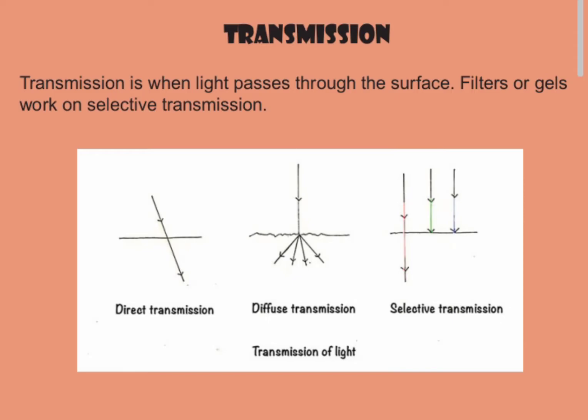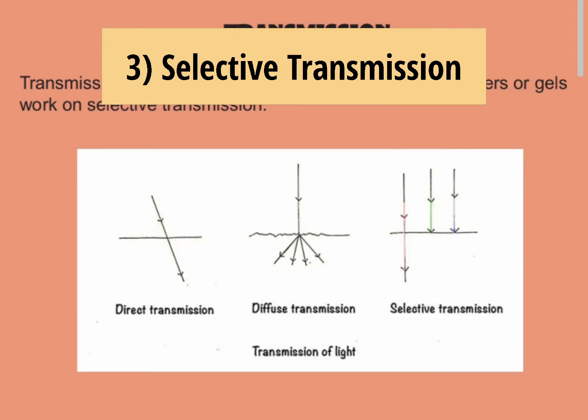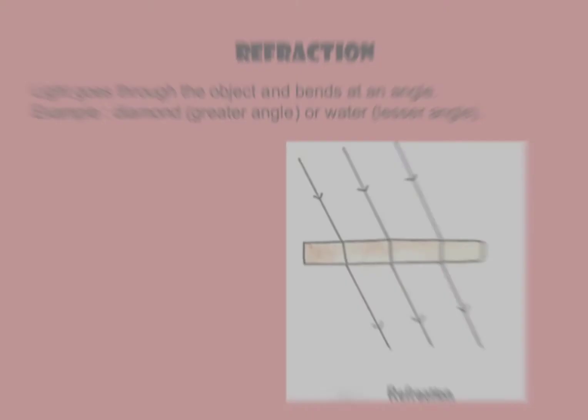The second type involves frosted glass — light will be softer, less contrasty, and of less intensity. The last type is selective transmission, when light goes through a colored object: a portion will be absorbed and another portion will be transmitted through the object.